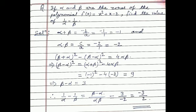Now let us consider another question. If alpha and beta are the zeros of the polynomial f(x) = x² + x - 2, find the value of 1/α - 1/β. In the solution: sum of zeros = α + β = -b/a = -1/1 = -1, and product of zeros = αβ = c/a = -2/1 = -2.